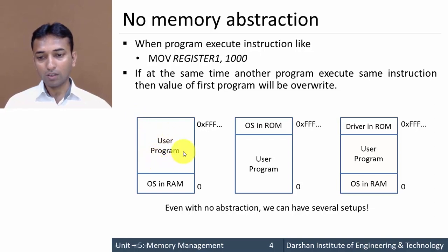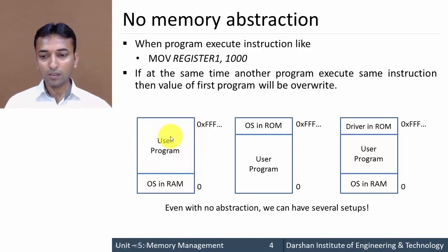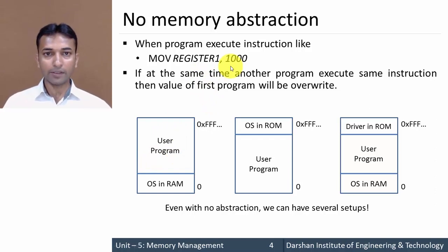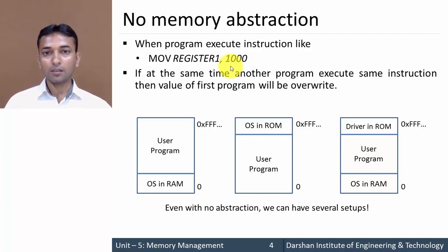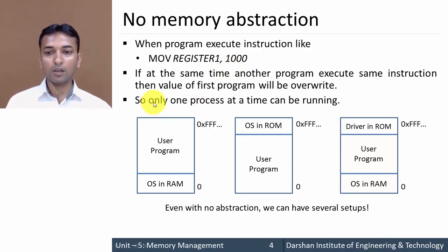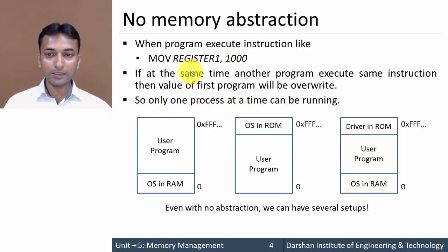The user has a single piece of memory from address 0 to some maximum address. If this memory is used by more than one program, then the content of the first program is overwritten by the second program. This means we cannot execute more than one program at the same time — the value stored by the first program is overwritten by the second. So only one process at a time can be running without memory abstraction.